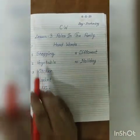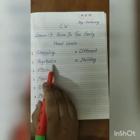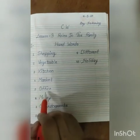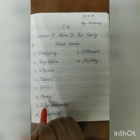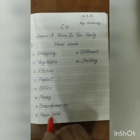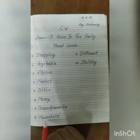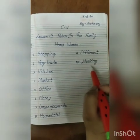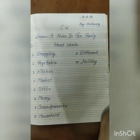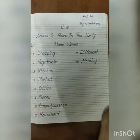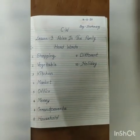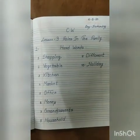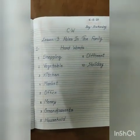To recap, your ten hard words are: number one shopping, number two vegetable, number three kitchen, number four market, number five office, number six money, number seven grandparents, number eight household, number nine different, and number ten holiday. You have to do this work in a proper line and proper format in beautiful handwriting as I told you, and you also have to learn these words.